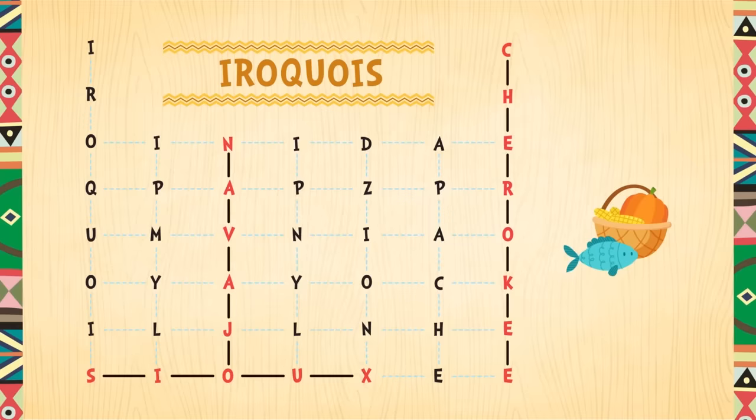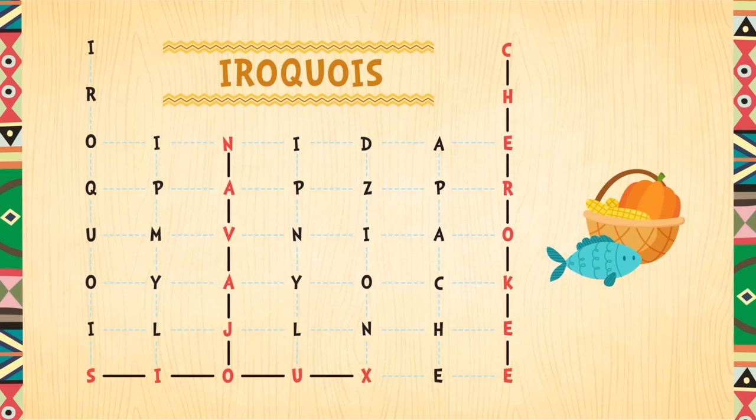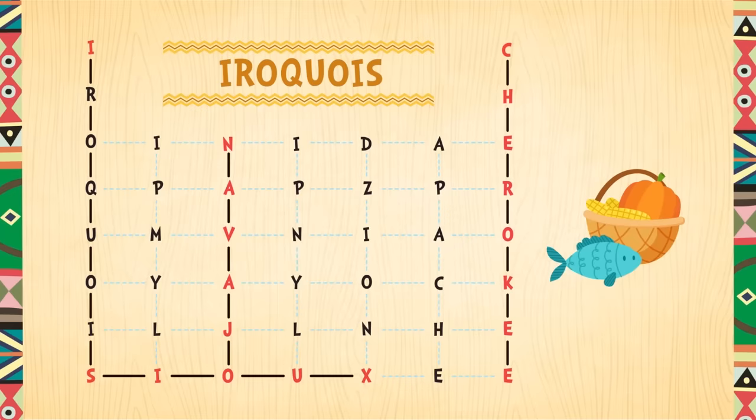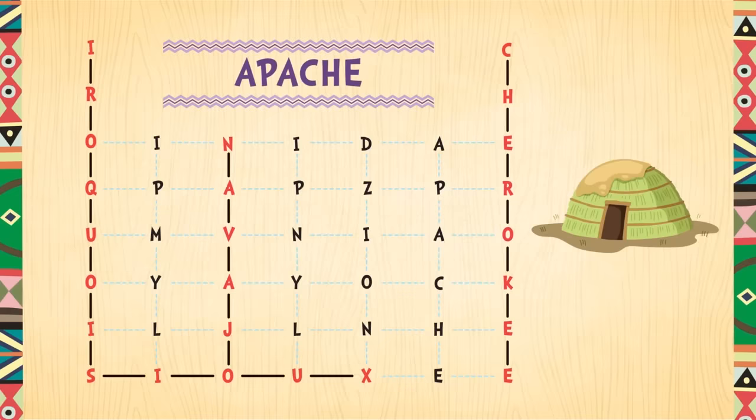Native Americans of the Iroquois tribe lived in the northeast region. They were known for fishing and agriculture — agriculture is another word for farming. Do you see the name Iroquois? It starts with the letter I. It's right here — I R O Q U O I S. Good job!